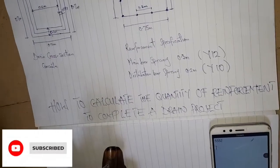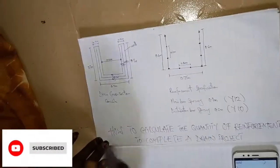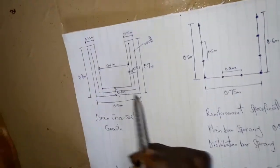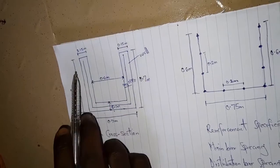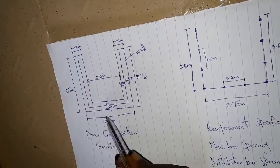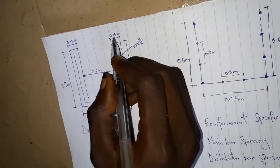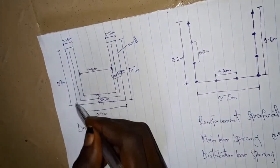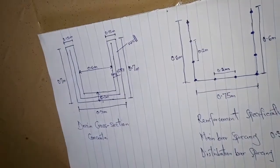The diagram here shows the concrete drainage. We have the wall, the base, and the other wall. The thickness of the wall is 0.15 meter, the thickness of the base is 0.1 meter, and we have the reinforcement positioned at the middle of the drainage.